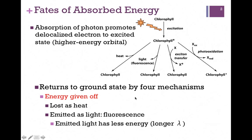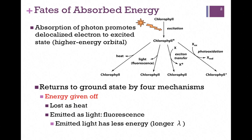In two of these ways it returns to the ground state but we don't gain anything in the process. On the far left, the chlorophyll may return to the ground state by emitting that energy as heat — we haven't gained anything in that process. It may also return to the ground state by emitting that energy as a wavelength of light. We can never pass on 100% of the energy we receive, so what is emitted is a longer wavelength, meaning less energy, and it fluoresces. Again, we've returned to the ground state but haven't captured any of that energy. These two processes do not relate to photosynthesis.